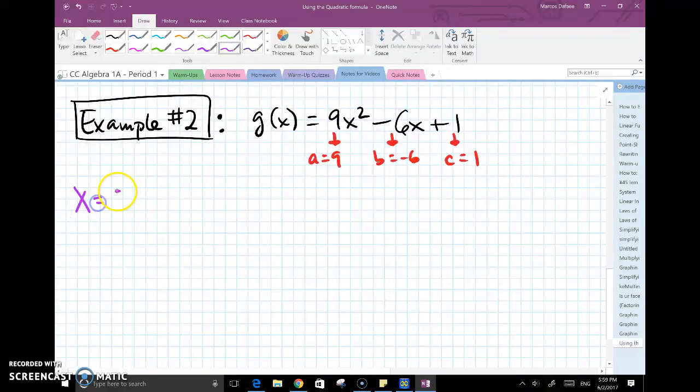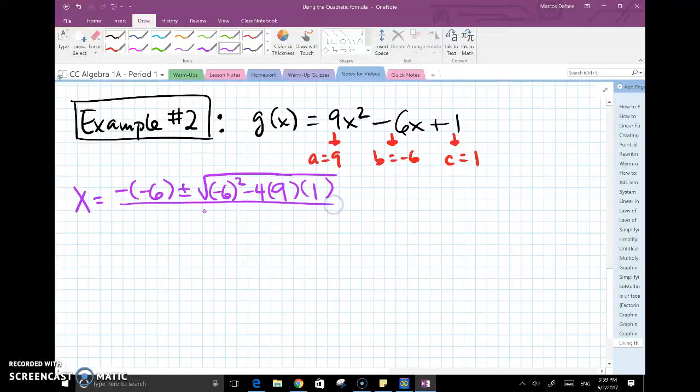It would be x equals negative negative 6 plus minus square root of negative 6 squared minus 4 multiplied by my a, which is 9, and my c, which is 1, all over 2 times my a, which is 9.